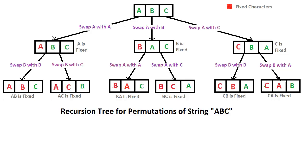This is the first node: I swap a with a and get this node. I swap b with b and get this node. I come back and swap b with c and get this node. Then I come back up. In this node I've already swapped a with b. Now I'll swap a with a, then swap a with c. Then I come back and swap b with b — because I want to print this value — and then swap b with a. That's how the recursion tree for this permutation works.